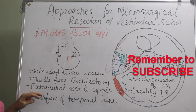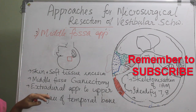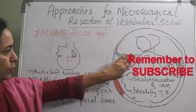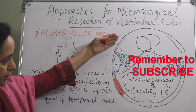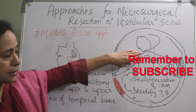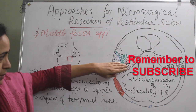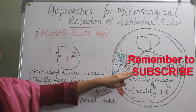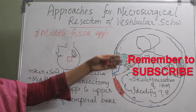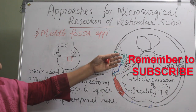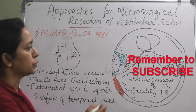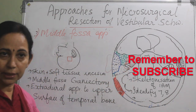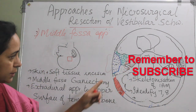After that, an extradural approach to the upper surface of the temporal bone is performed. On doing the craniotomy, this area will be reached — the upper surface of the temporal bone and also the posterior fossa will be exposed. After this, skeletonization of the entire internal acoustic meatus is carried out.